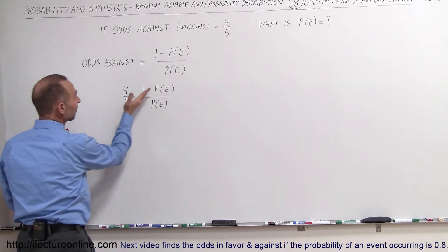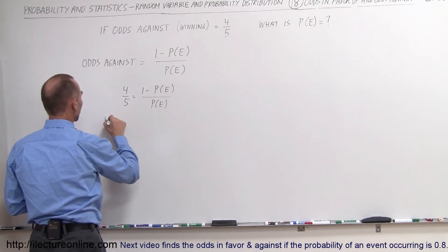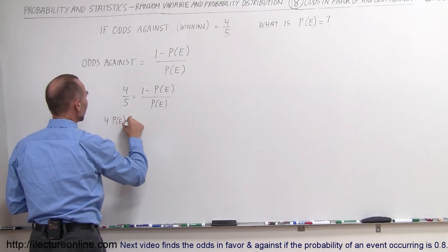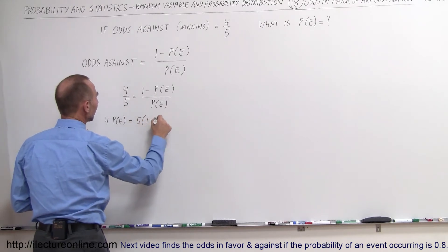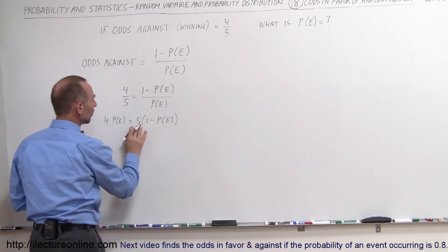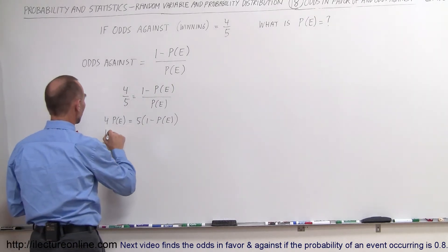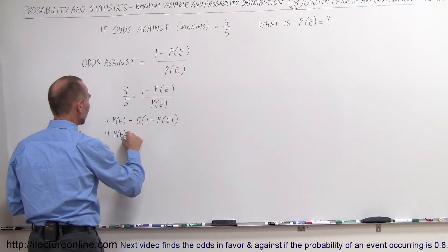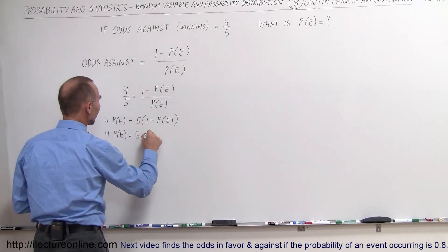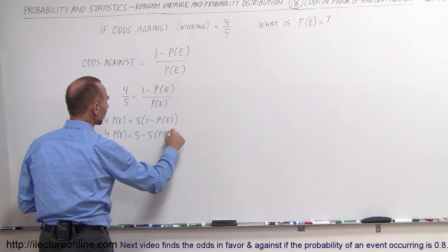We multiply 5 times what's on top and 4 times what's on the bottom. So we have 4 times the probability of the event occurring is equal to 5 times (1 minus the probability of the event occurring). Now we multiply through and get rid of the parentheses: 4P(E) = 5 minus 5 times the probability of the event occurring.